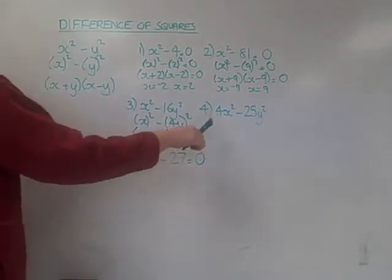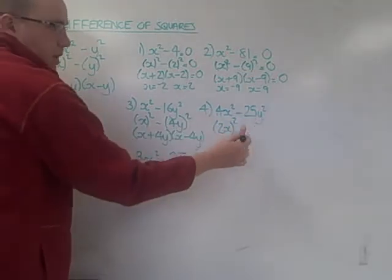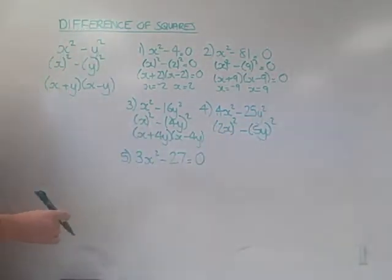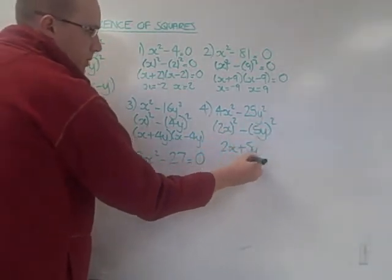This time, 2x times 2x gives me 4x², and 5y times 5y is 25y². Since I got the two things squared here, I can say it's (2x + 5y)(2x - 5y).